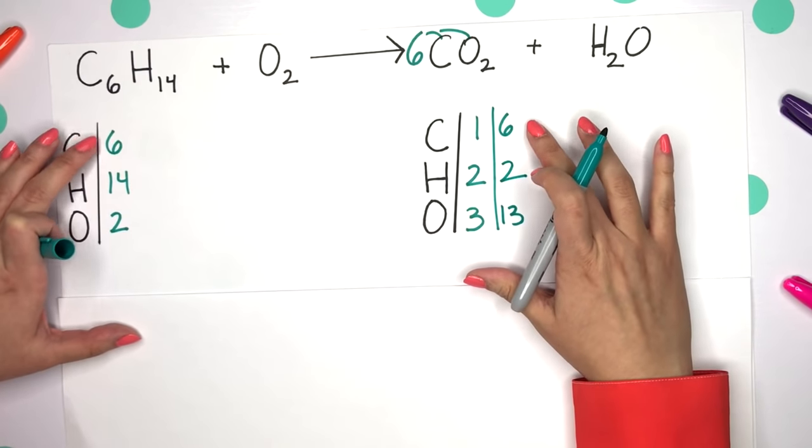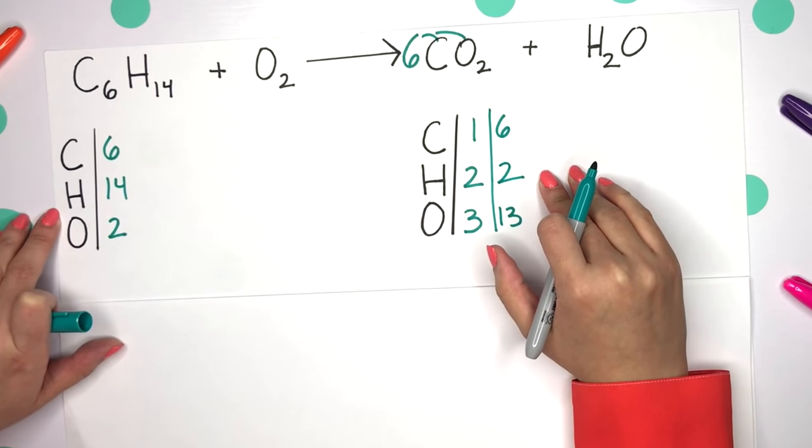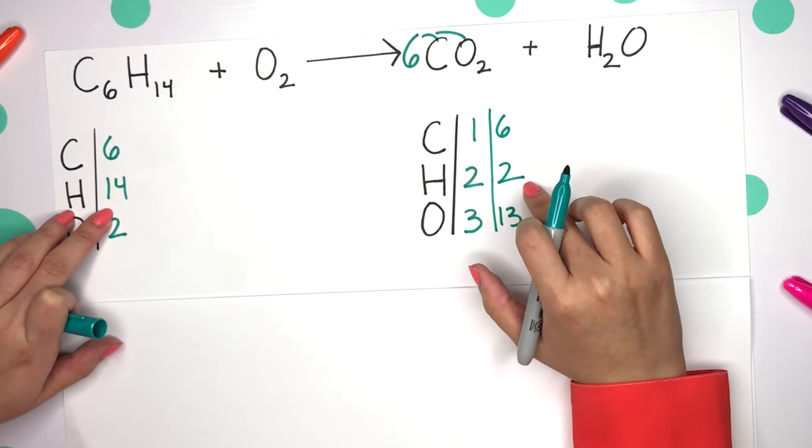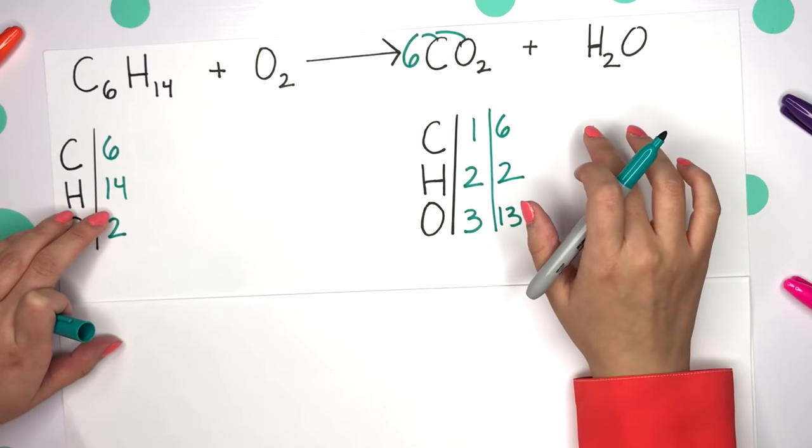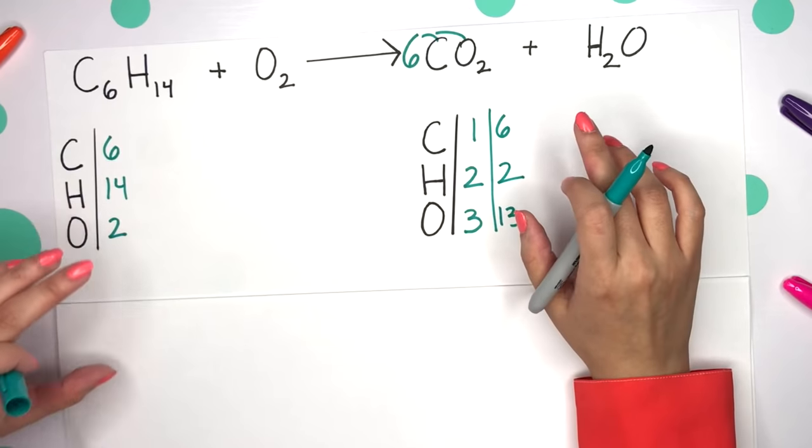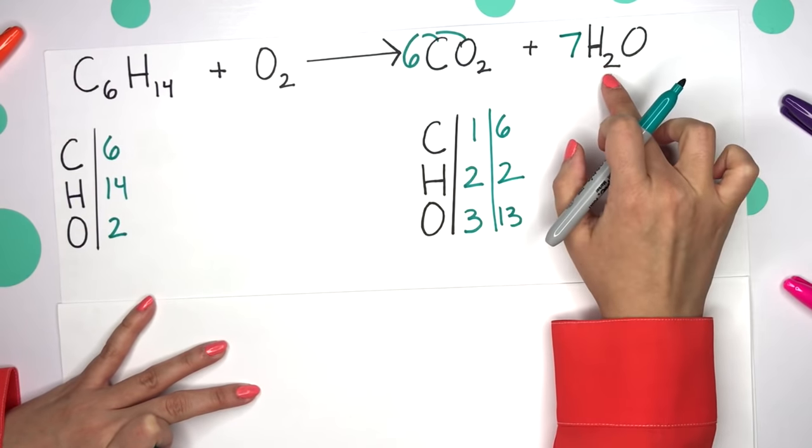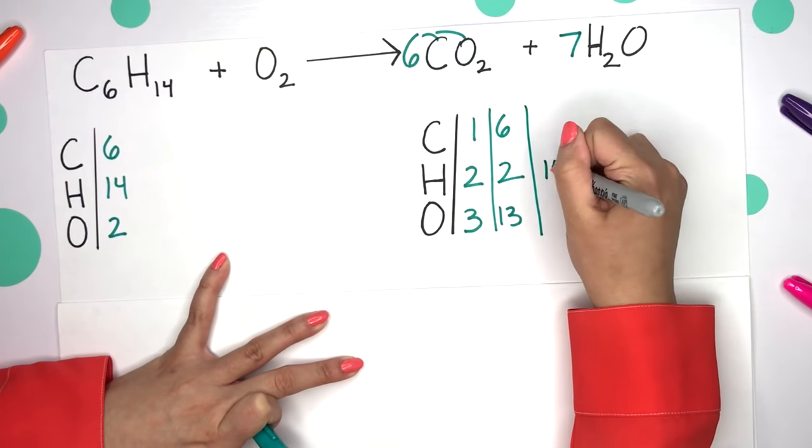Now that carbons balance, let's go down the list and balance out our hydrogen. So in this case, hydrogen has 14. On the product side, we only have two. So I want you to think of, what's going to multiply by two to give us 14? And that would give us seven. So seven times this two would give us 14 hydrogen.